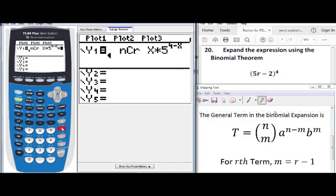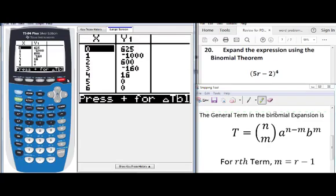OK, then you multiply, and b here is negative 2, so I do negative 2, 2 to the x power. Then we will go to second graph, look at the table.